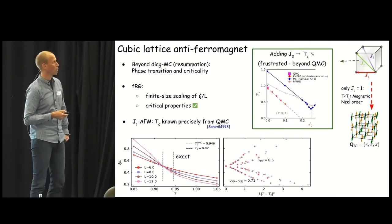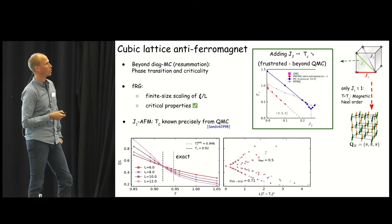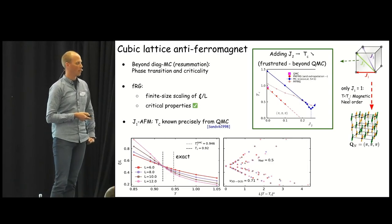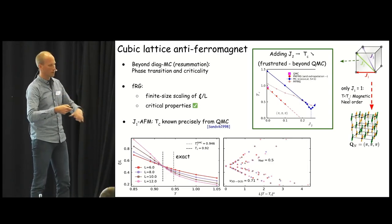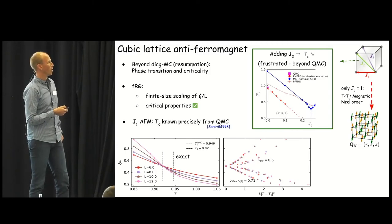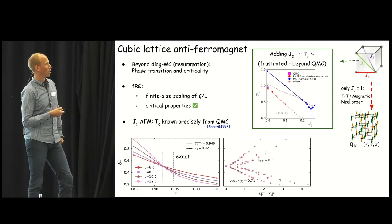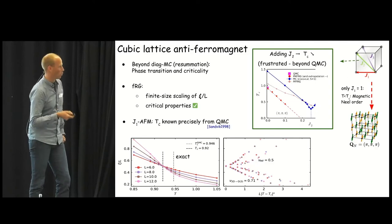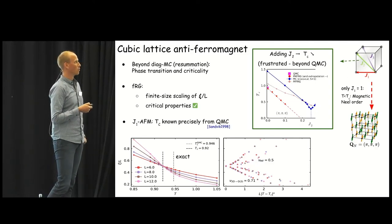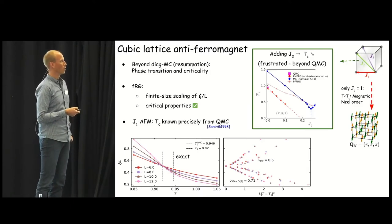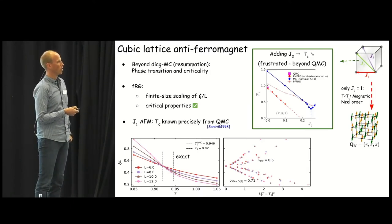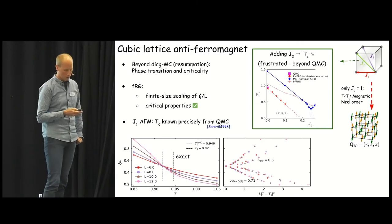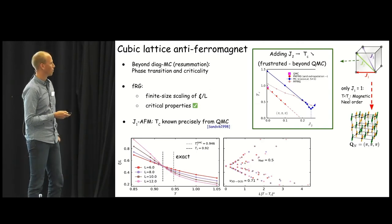Now, let's leave quantum Monte Carlo behind by switching on a J2, so a next-nearest neighbor coupling in this lattice, and this frustrates the lattice. So, Monte Carlo is out of the game, and we can still use our method, the FRG, to follow the critical temperature with increasing J2, and see how it drops quite drastically. Previous numerics have apparently underestimated the quite drastic drop of the critical temperature when you add J2. So, this opens the question, is there maybe a larger paramagnetic ground state region in this system than was anticipated before?